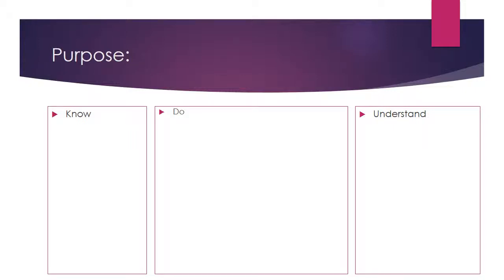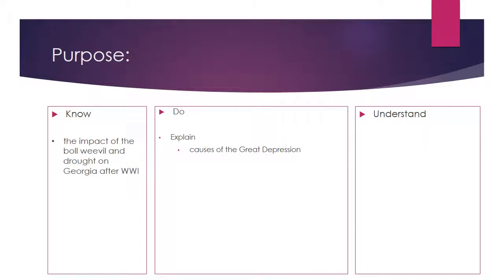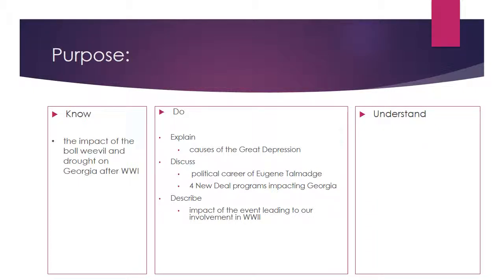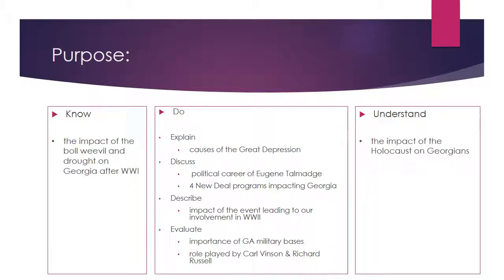The purpose of this unit covers three things: what you should know, do, and understand. You should know the impact of the boll weevil and the drought on Georgia after World War I, be able to explain the causes of the Great Depression, discuss the political career of Eugene Talmadge, and identify the four New Deal programs that impacted Georgia. You should describe the impact of events leading to our involvement in World War II, evaluate the importance of Georgia's military bases and the roles played by Carl Vinson and Richard Russell, and understand the impact of the Holocaust on Georgians and how that leads into attitudes toward the Civil Rights Movement.